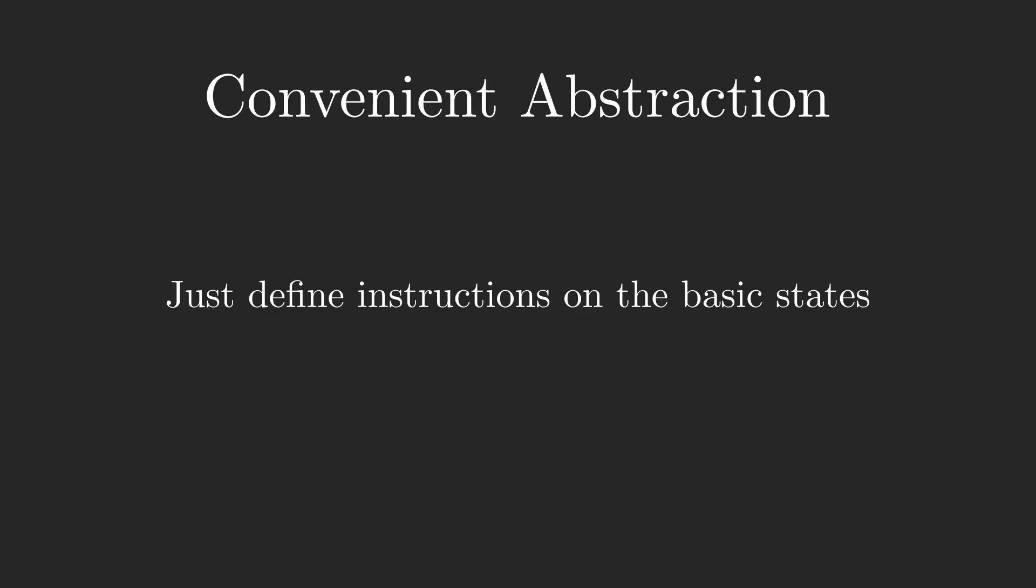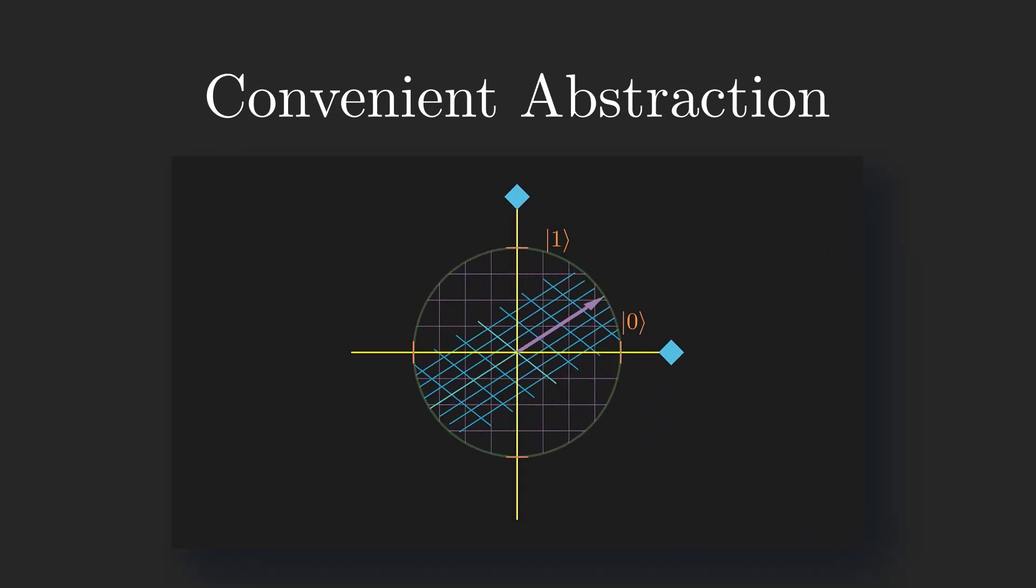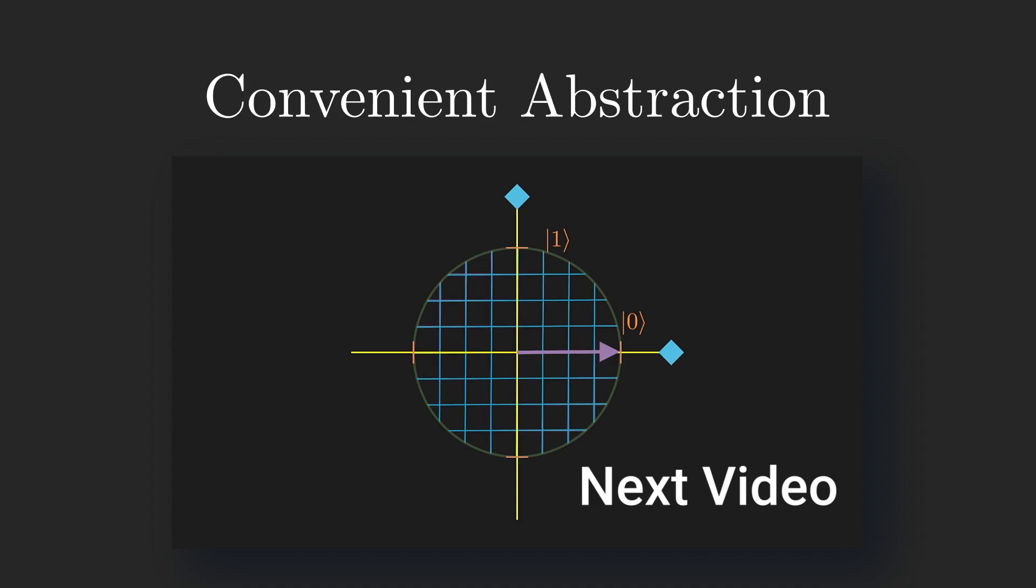Anyone familiar with linear algebra might sense a connection here to how we define linear transformations as a matrix whose columns are the transformed versions of the standard basis vectors. For now, I'll just say that this isn't a coincidence. Instead, to decide what happens to input states which are not one of the basic states, there's a very nice analogy to how we think about randomized algorithms.